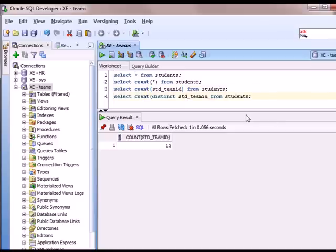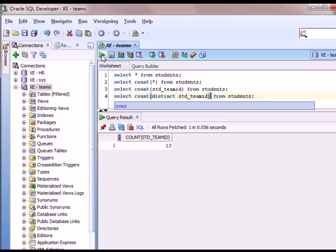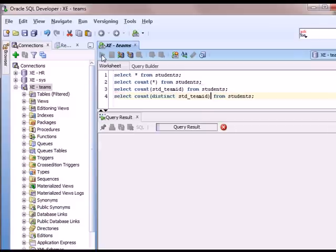Then I'm going to do the select count distinct for team ID. Add my right parenthesis and then run that and I get a result set of four.